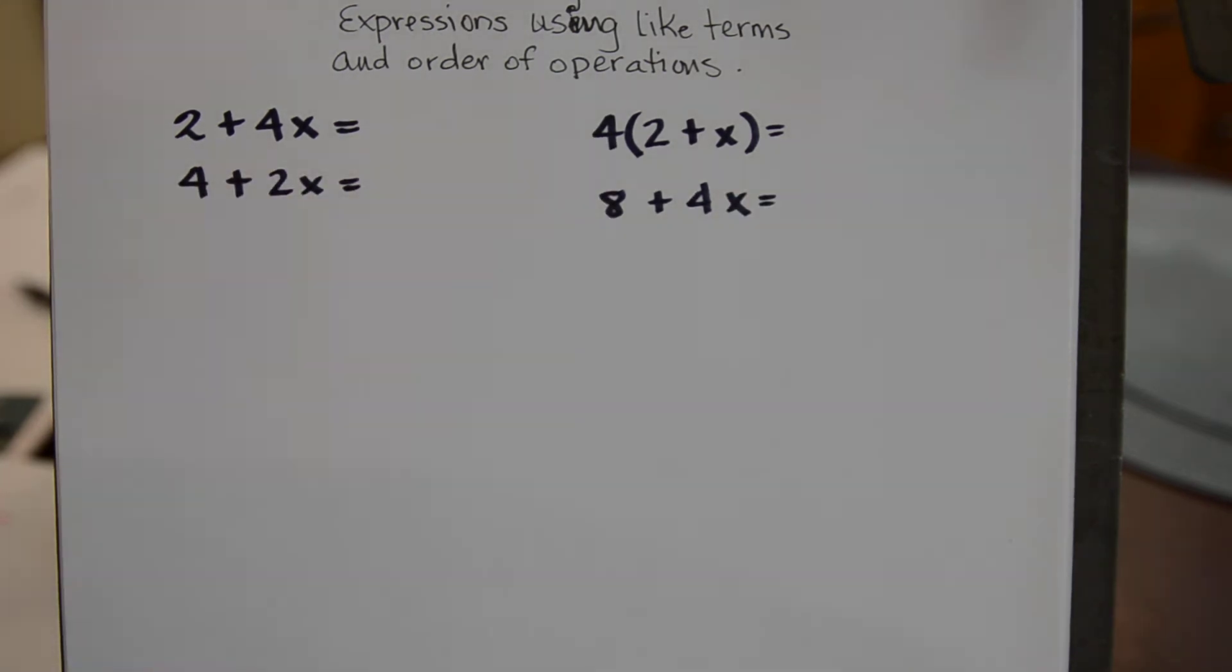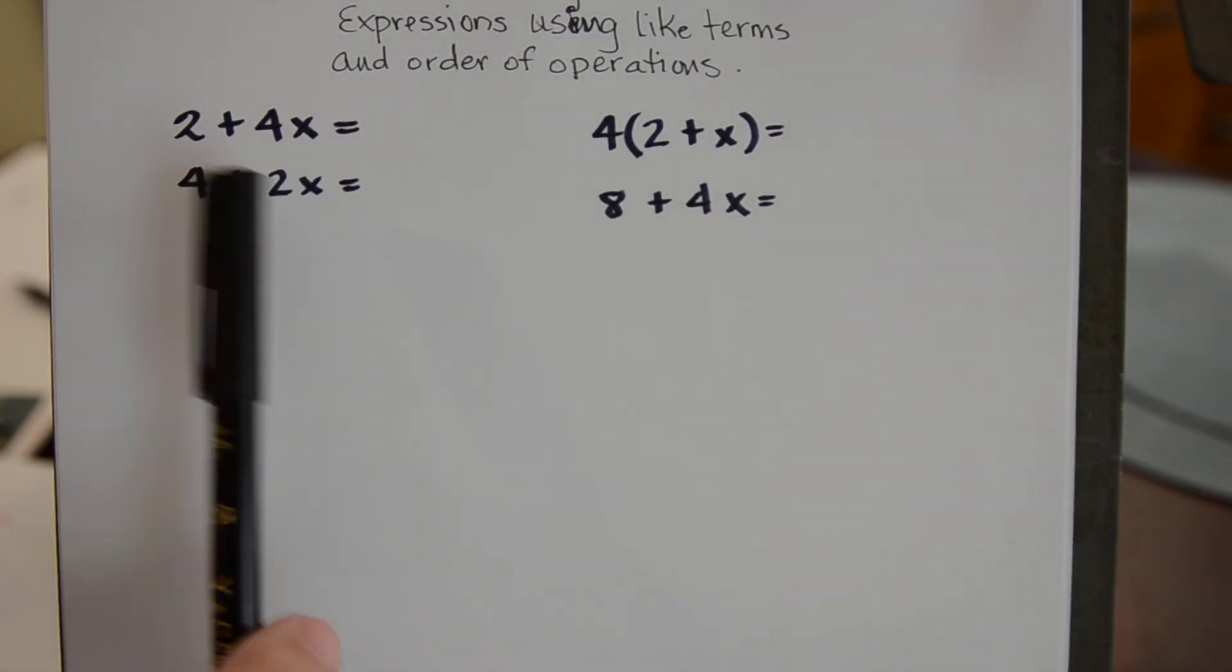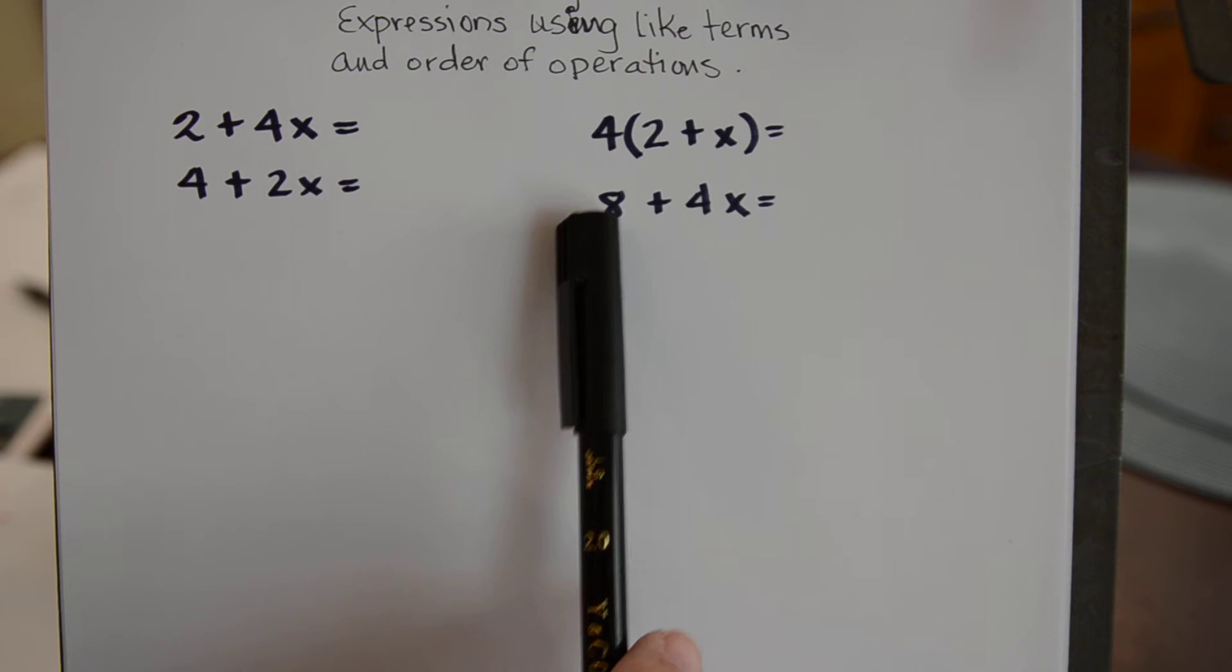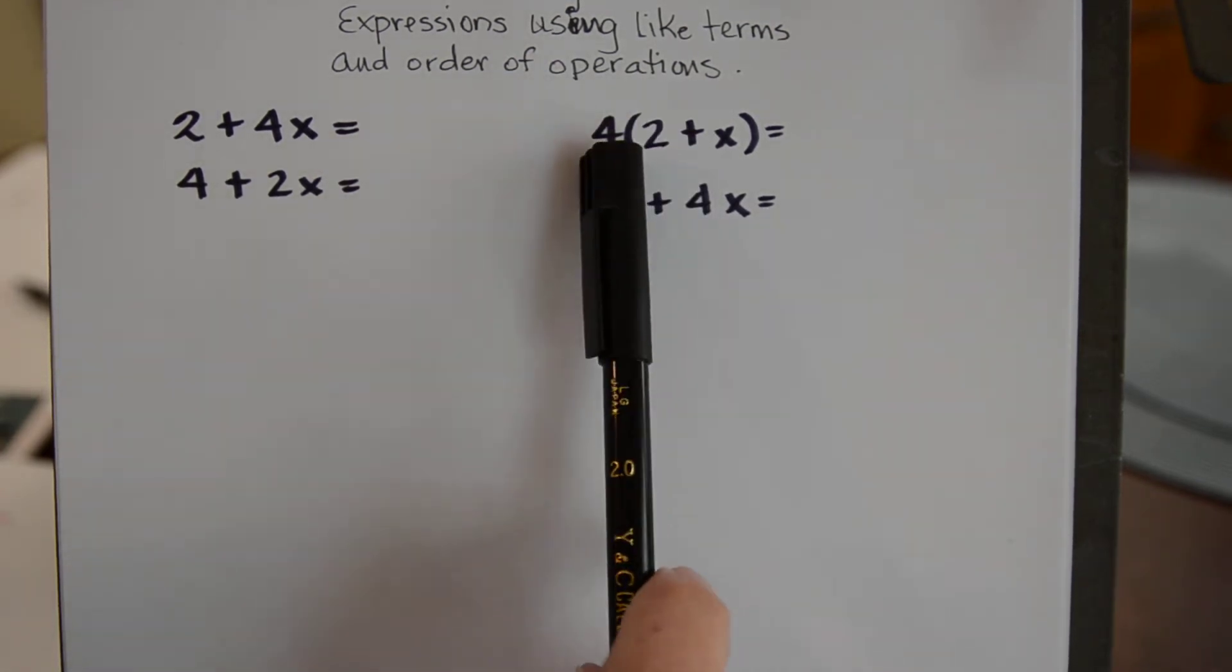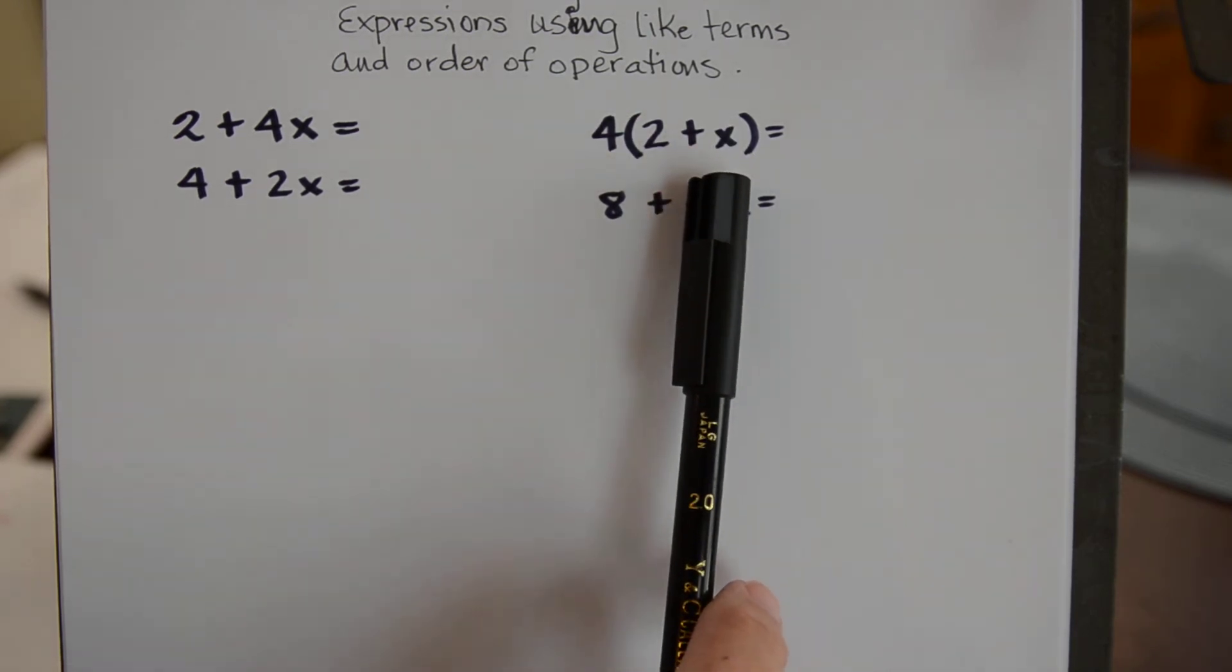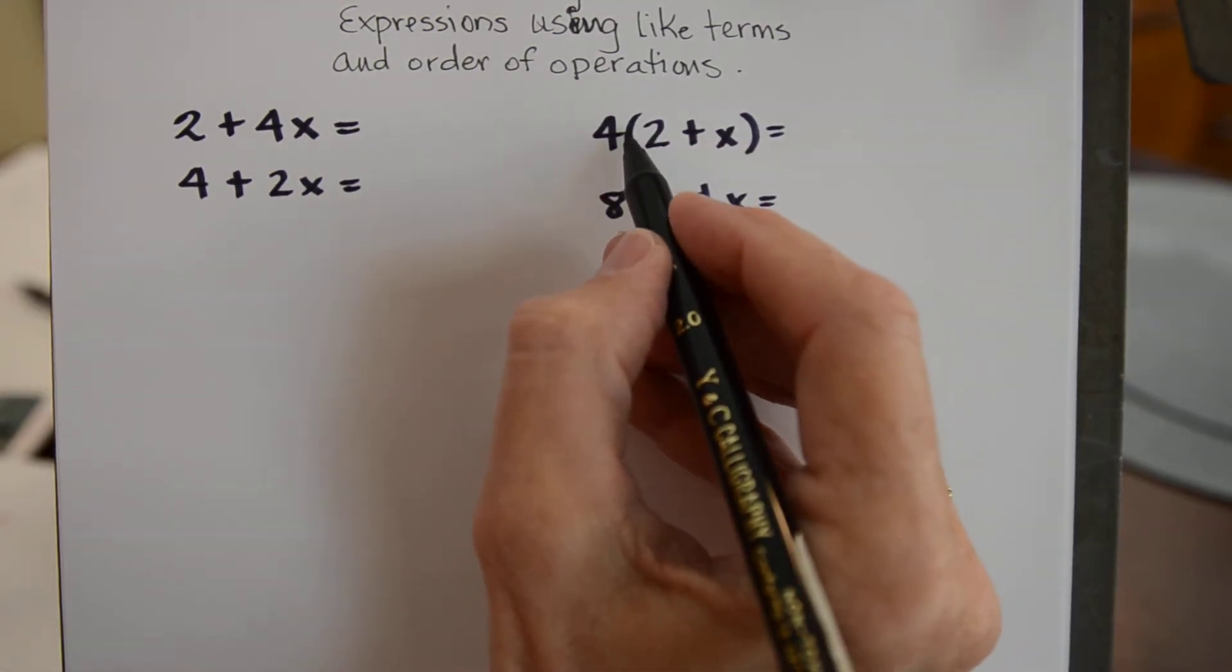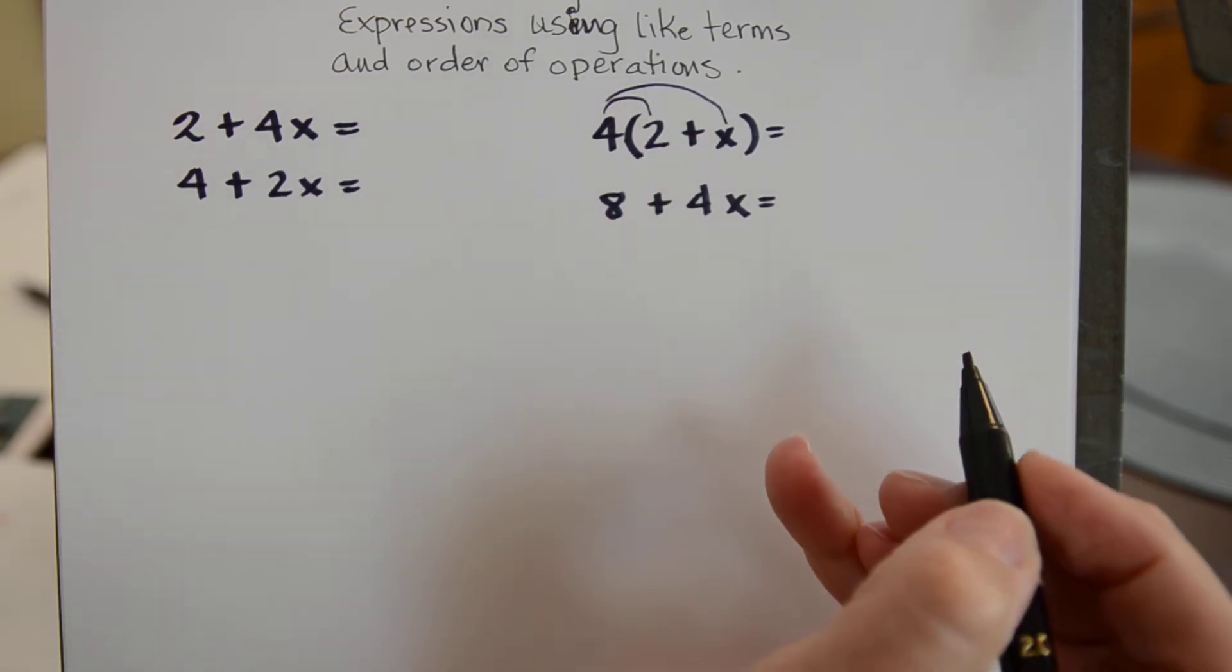So let's look over here. This 8 plus 4x is exactly the same thing that's going on over here. These are not like terms so I cannot combine them. But up here this is the distributive property and this is something that I can do. And this is a matter of taking what's being multiplied on the outside and distributing it to each of the pieces on the inside.